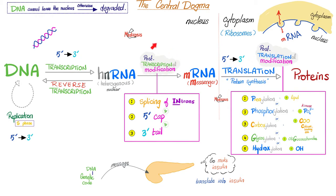This is called post-translational modification, not to be confused with post-transcriptional modification. After translation, you get post-translational modification of proteins, which include prenylation, phosphorylation, carboxylation, glycosylation, or hydroxylation. Prenylation means adding lipids. Phosphorylation means adding phosphate. Carboxylation means adding a carboxyl group, or COO, i.e. CO2. Glycosylation means adding oligosaccharides. Hydroxylation means adding hydroxyl groups to proteins.